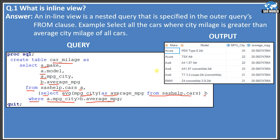Looking at the output, the make variable holds the brand — Acura, Audi, BMW. Model is the car model, and MPG_City values coming through are 24, 22, 22, and so on. The average is 20. This is a partial output due to space, but we can see we selected all cars where MPG_City is greater than the average city mileage of all cars.